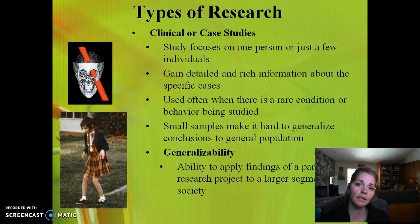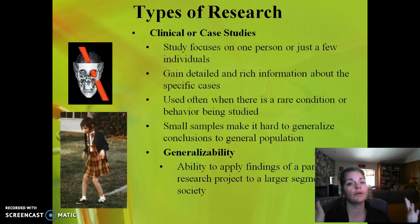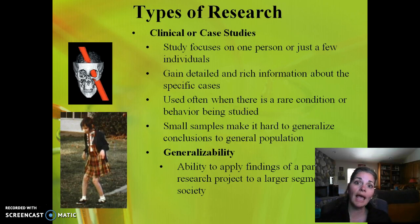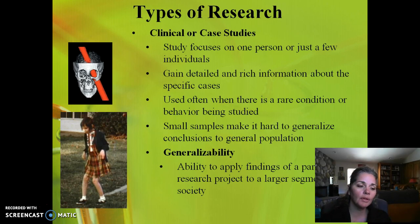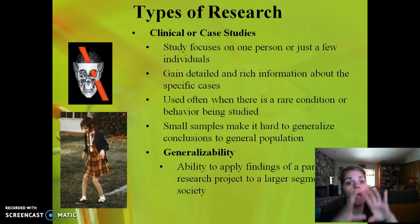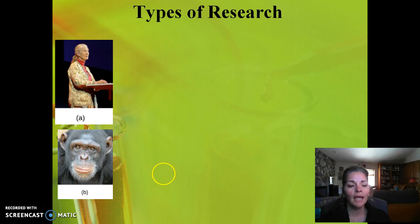Generalizability is key — that's when we apply our findings from a specific research study to the larger segment of the population. It's impossible to study every single person in a population, so we take a representative sample. We study that sample, and if they're representative, we can draw conclusions about the larger population based on that sample. We'll talk more about that in a bit.